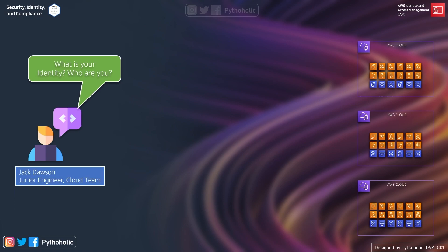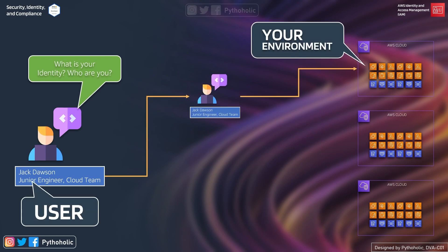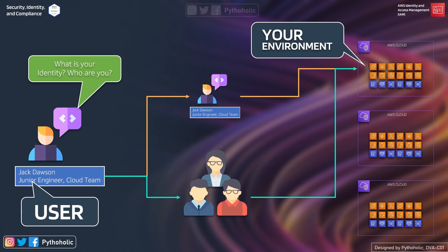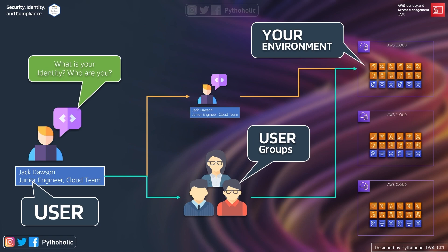You will tell IAM that you are Jack Dawson, junior engineer, cloud team. Based on that, we add you to a particular AWS account and attach the relevant policies and permissions for you to work on that environment. Similarly, there might be a group of users that can be part of the same account or a different account as part of a user group. With IAM you can create a single user or create a group and assign a policy that applies to all users within that group.